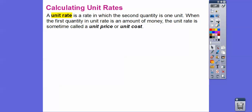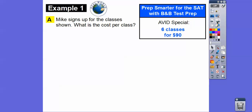Our key concept here is calculating what's called a unit rate. A unit rate is a rate in which the second quantity — the denominator — is one, or one unit. When the first quantity in a unit rate is an amount of money, the unit rate is sometimes called the unit price or unit cost. We just want to make sure that the denominator equals one.